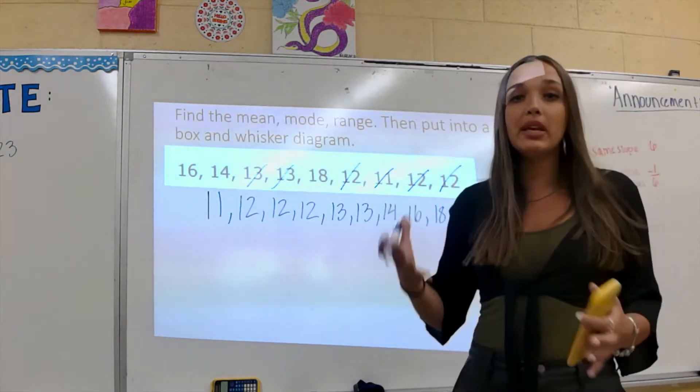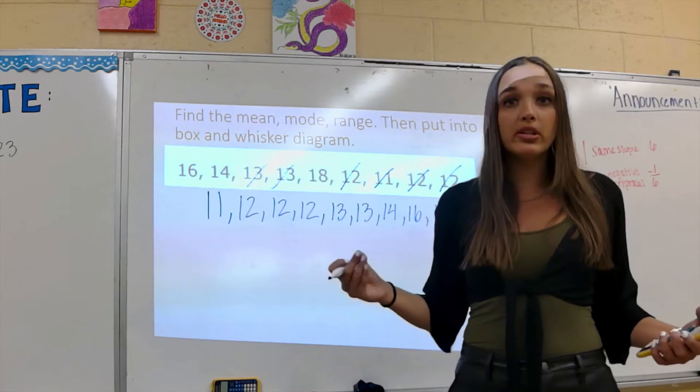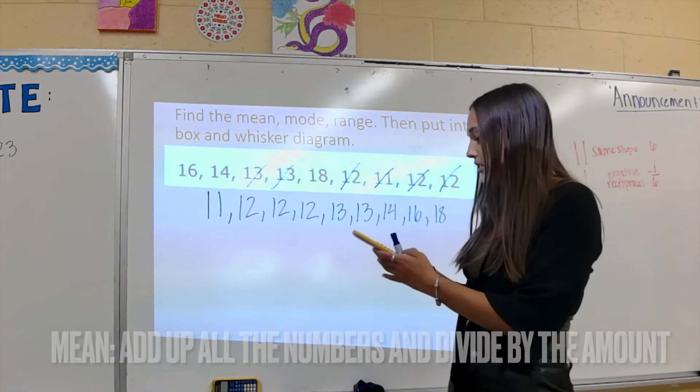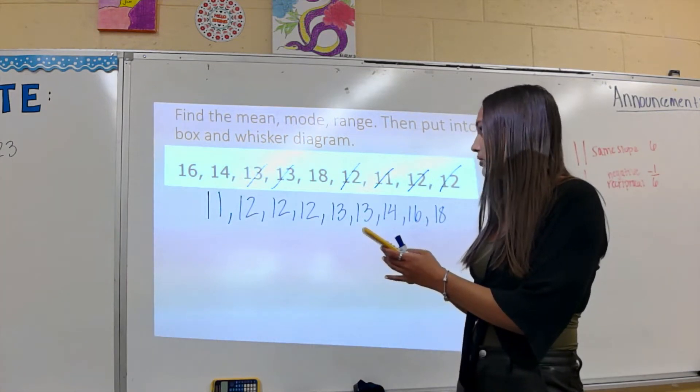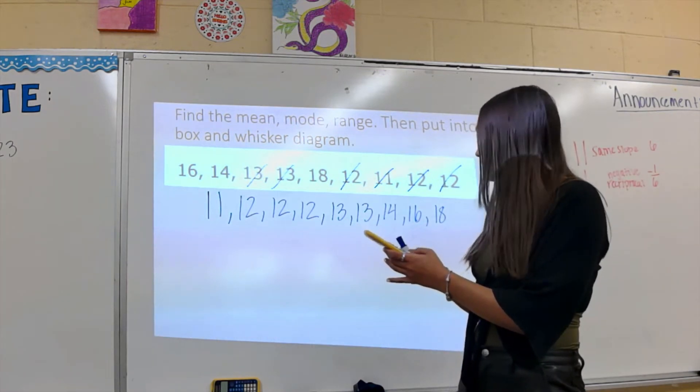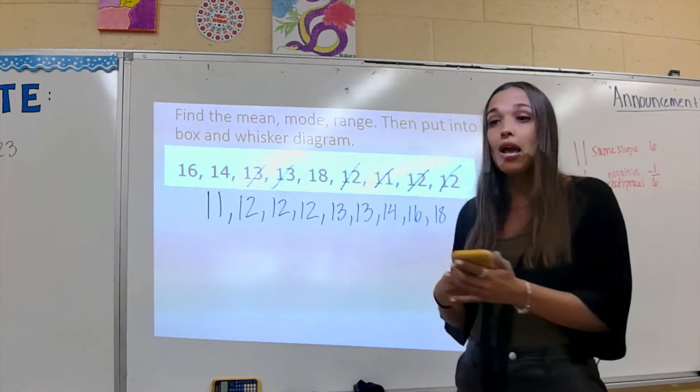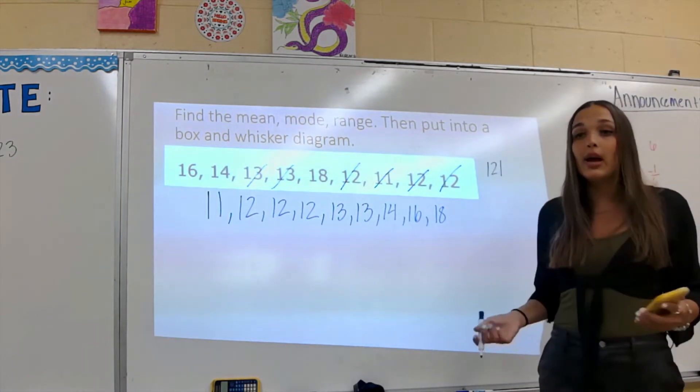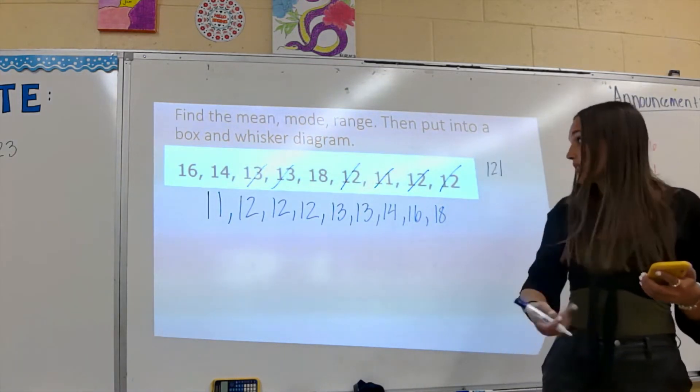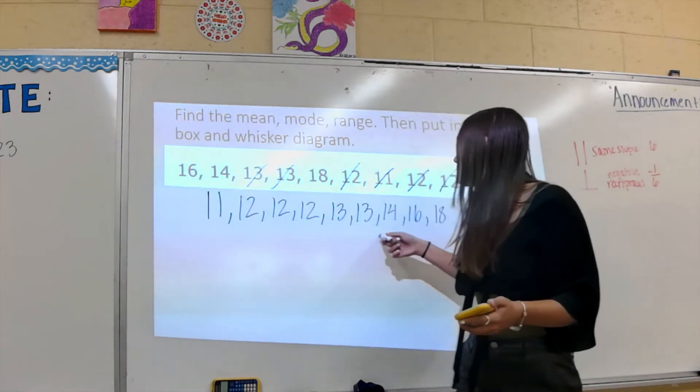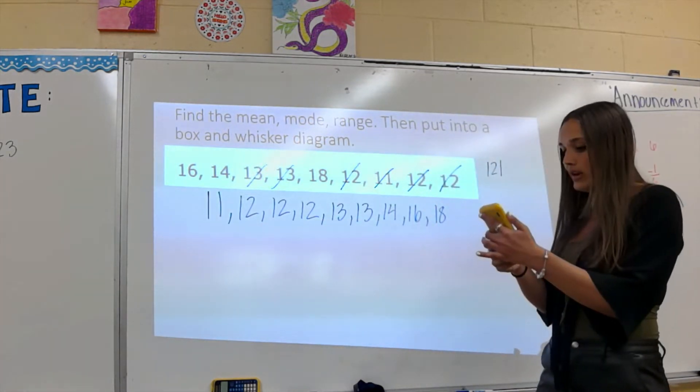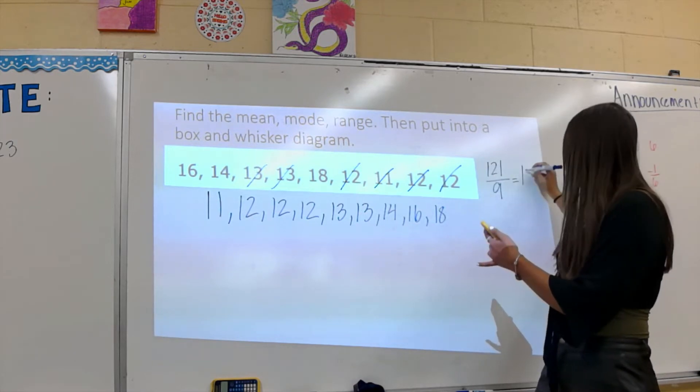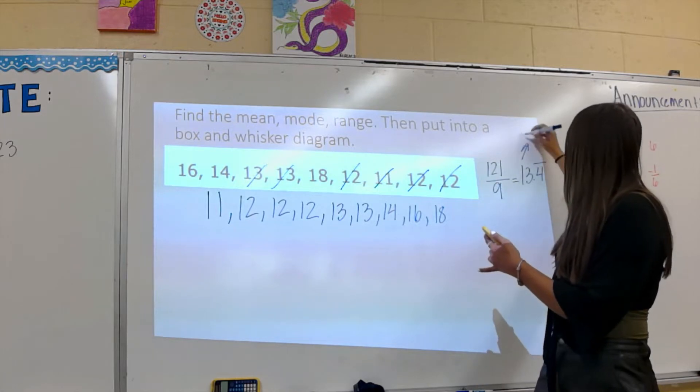We want to find the mean. The mean is when we add up all the numbers and divide by the amount that we have. So I'm going to put in my calculator 11 plus 12 plus 12 plus 12 plus 13 plus 13 plus 14 plus 16 plus 18. When I do that, I get 121. Now I have to divide by the amount of numbers I have, which is 9. So I divide by 9 and my mean is going to be 13.4 repeated.